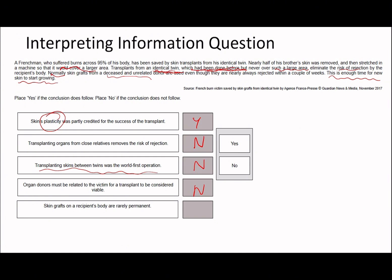Transplanting skins between twins was the world's first operation. It doesn't say anything about that because it says it had been done before, just never over such a large area. Organ donors must be related to the victim for a transplant to be able. It says here about deceased and unrelated donors. So this is also going to be no. Skin grafts on a recipient's body are rarely permanent. It says here they are nearly always rejected within a couple of weeks. So this is probably going to be true. The grafts act as a temporary stopgap whilst new skin can grow and replace. So yes, triple no, yes. That's what I got. Cool.